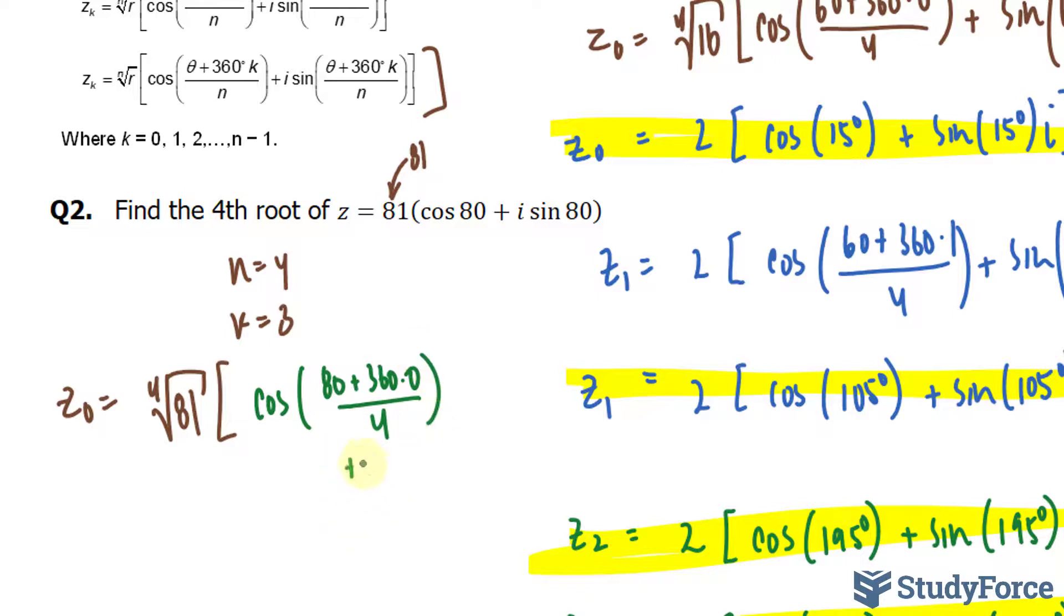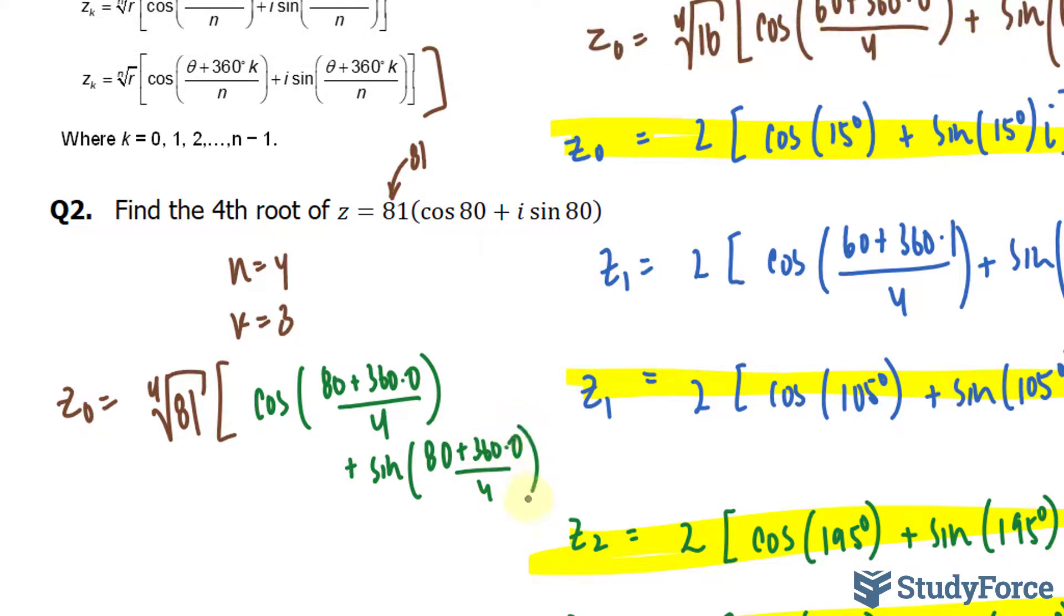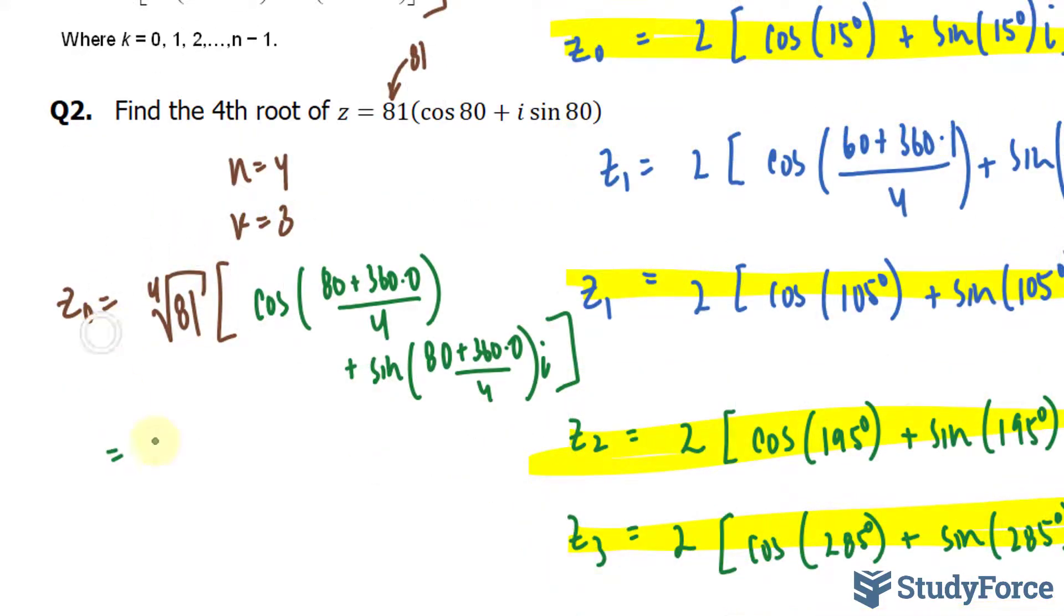Plus sine, the same expression, 80 plus 360 times 0 divided by 4 times the imaginary unit i. This reduces down to 3, and then we have cosine 80 divided by 4 is 20, plus sine 20 times i.